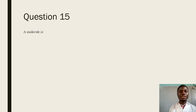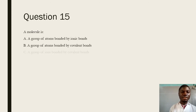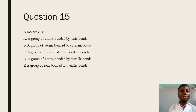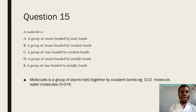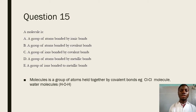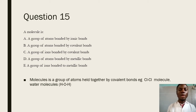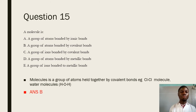Question 15 says: a molecule is — from what we already know, a molecule is a group of atoms held together by a covalent bond. For example, the chlorine molecule made up of two chlorine atoms is held together by a single covalent bond, while a water molecule has one oxygen atom bonded to two hydrogen atoms with two simple covalent bonds. The answer is B.